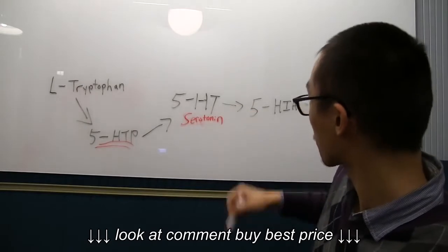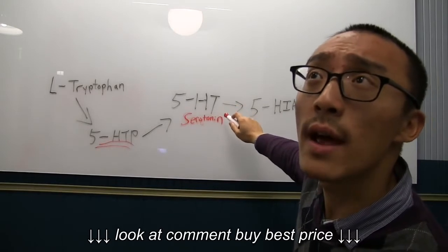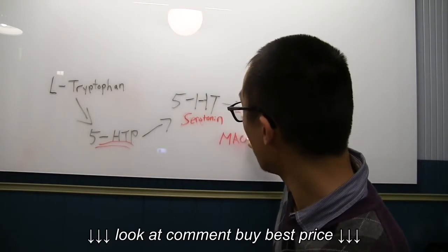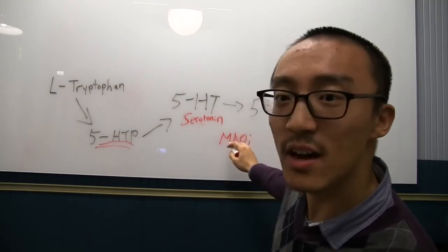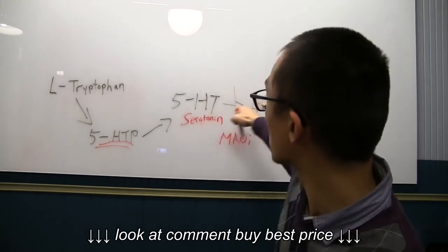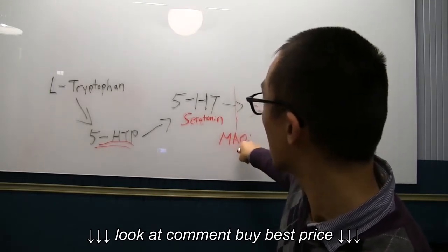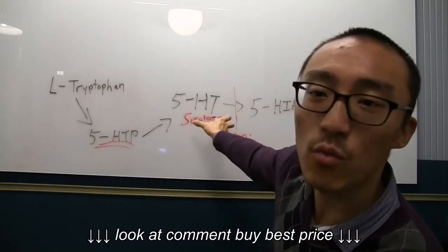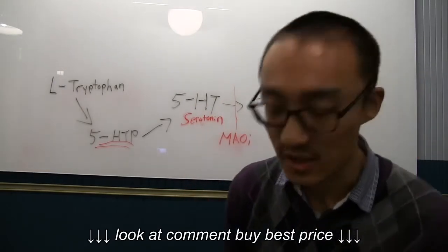The other thing while we're at this right here, serotonin gets broken down by what's called monoamine oxidase. So, if you've ever heard of MAOI, monoamine oxidase inhibitor, what this does is this prevents the breakdown of serotonin into this. So, this somehow binds to or maybe destroys the oxidase, the enzyme that destroys serotonin here. So, you have more serotonin left over for use if it's in the synaptic cleft or something like that. So, that's a little aside.